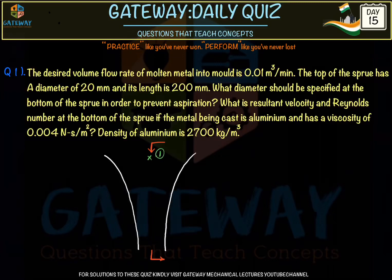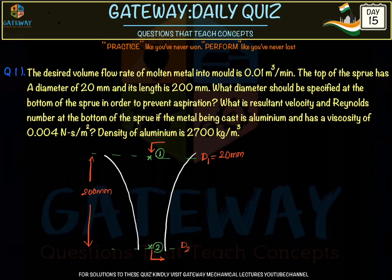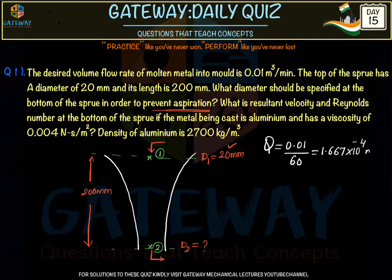We take two points on the sprue to analyse. In the question, the diameter at entry (top) is given as 20 mm and the length of the sprue is 200 mm. We will be moving somewhat fast as these questions are lengthy. The volume flow rate Q = 0.01 m³/min is converted to 1.667 × 10⁻⁴ m³/s.